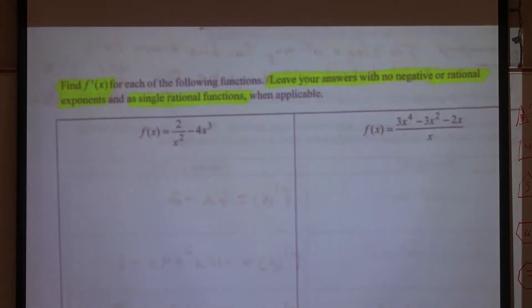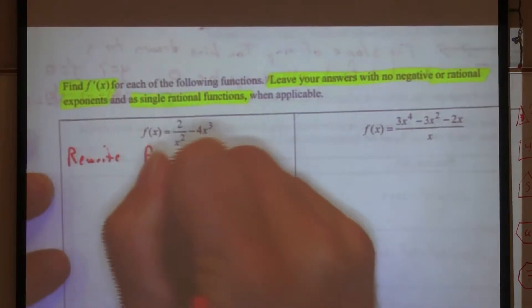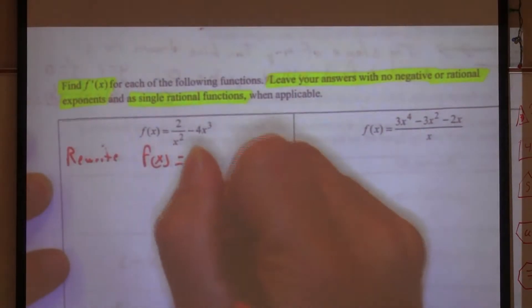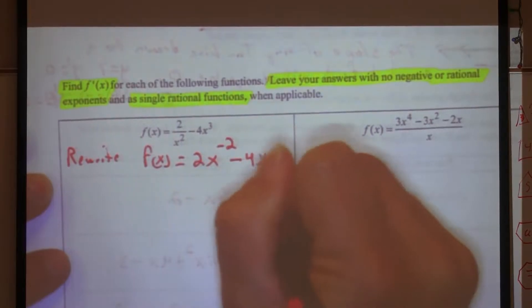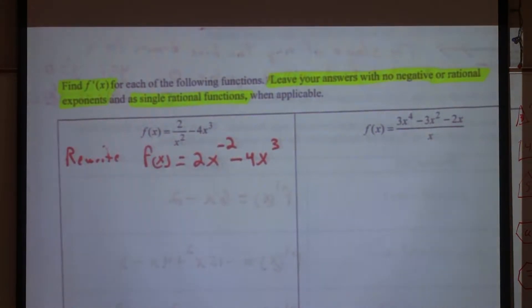Now, be careful. It says leave your answers with no negative or rational exponents, and as a single rational function. What does that mean? Well, I cannot have negative exponents. I cannot have exponents that are fractions. And my final answer can only be one fraction. One thing over one thing. I can't have a fraction plus another fraction. I've got to get a common denominator and make it one fraction. So here we go. Let's look at this first one. Before I can work it out, I need to put it in polynomial form, so I need to rewrite it.